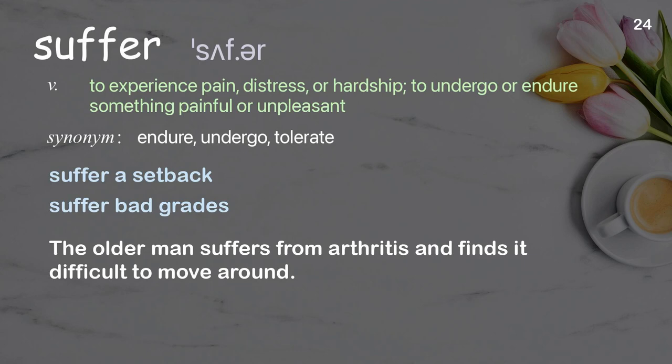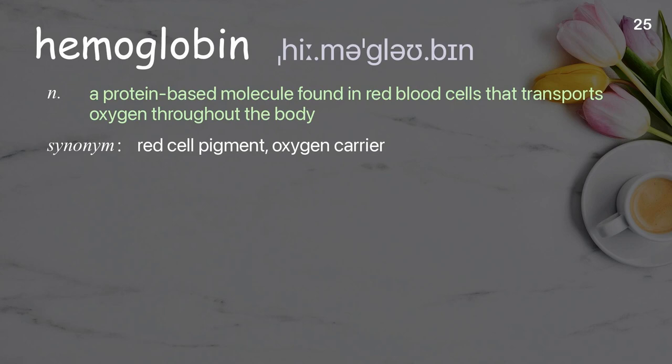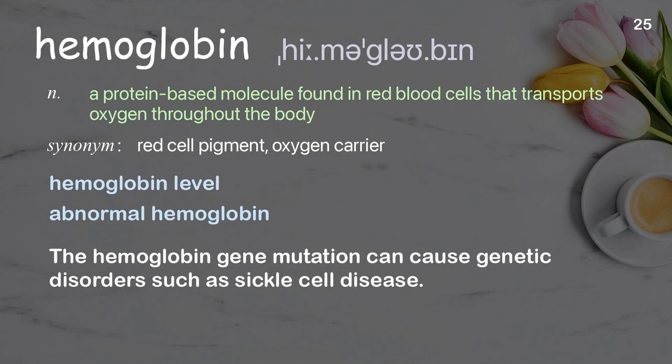Hemoglobin: a protein-based molecule found in red blood cells that transports oxygen throughout the body. Examples: hemoglobin level, abnormal hemoglobin. The hemoglobin gene mutation can cause genetic disorders such as sickle cell disease.